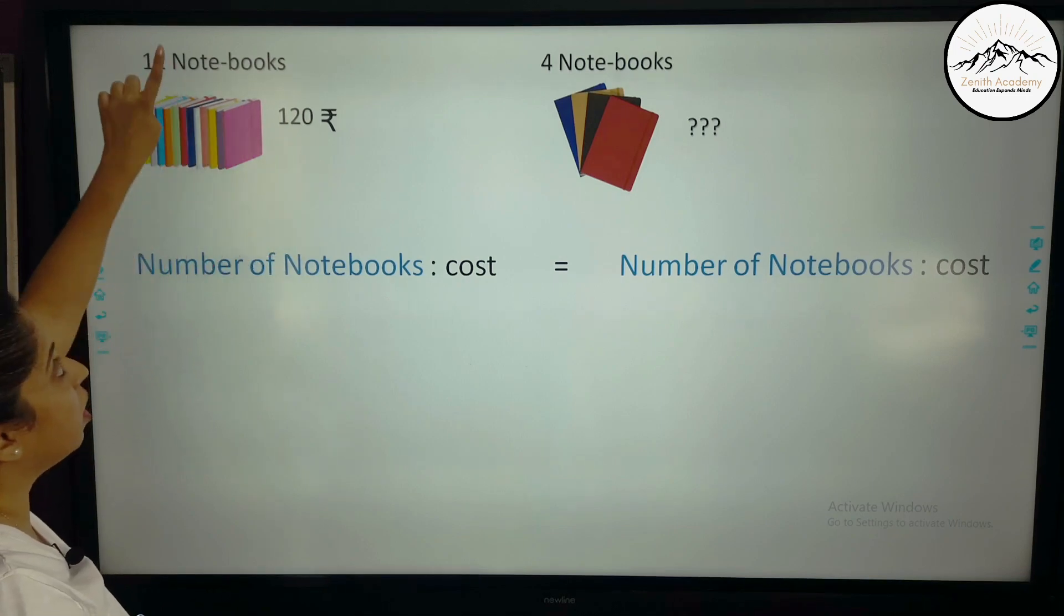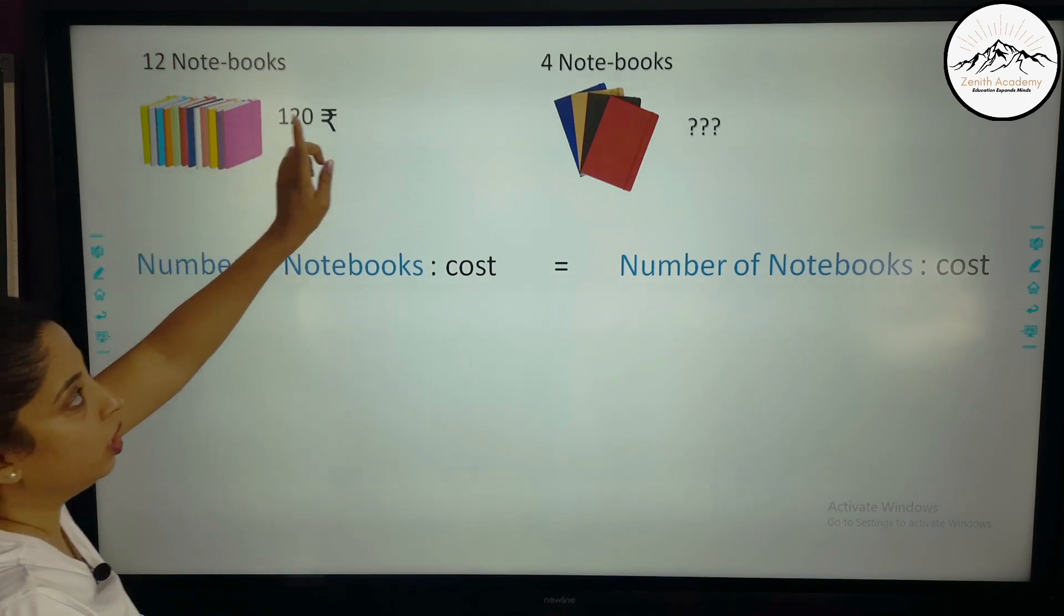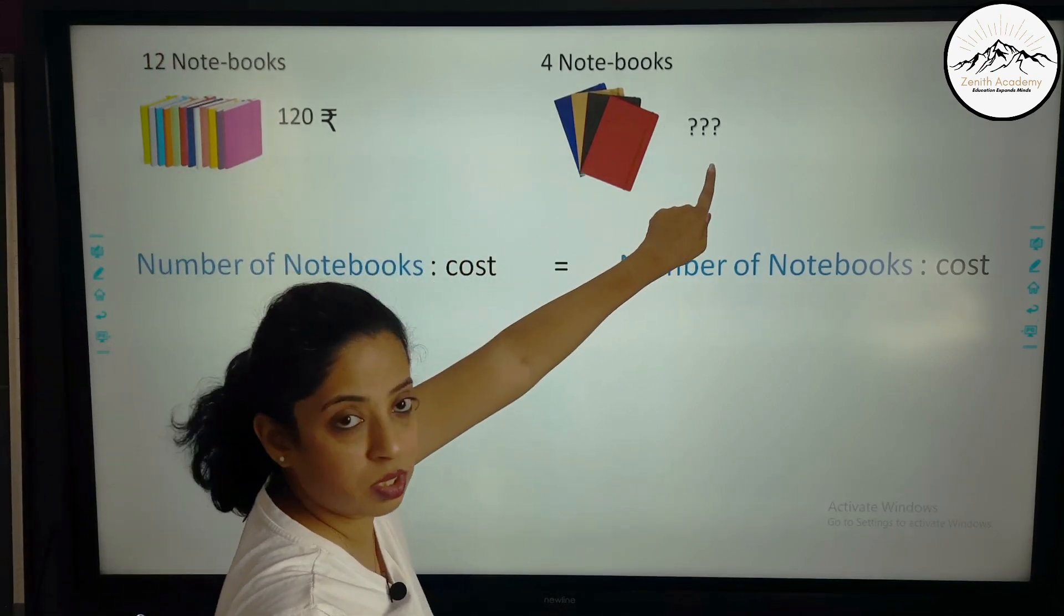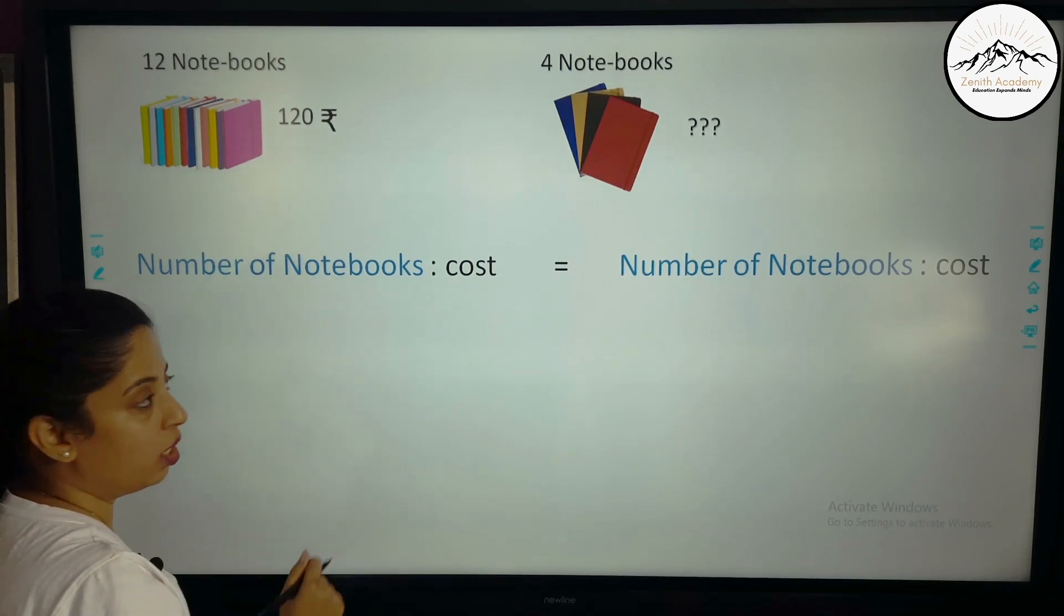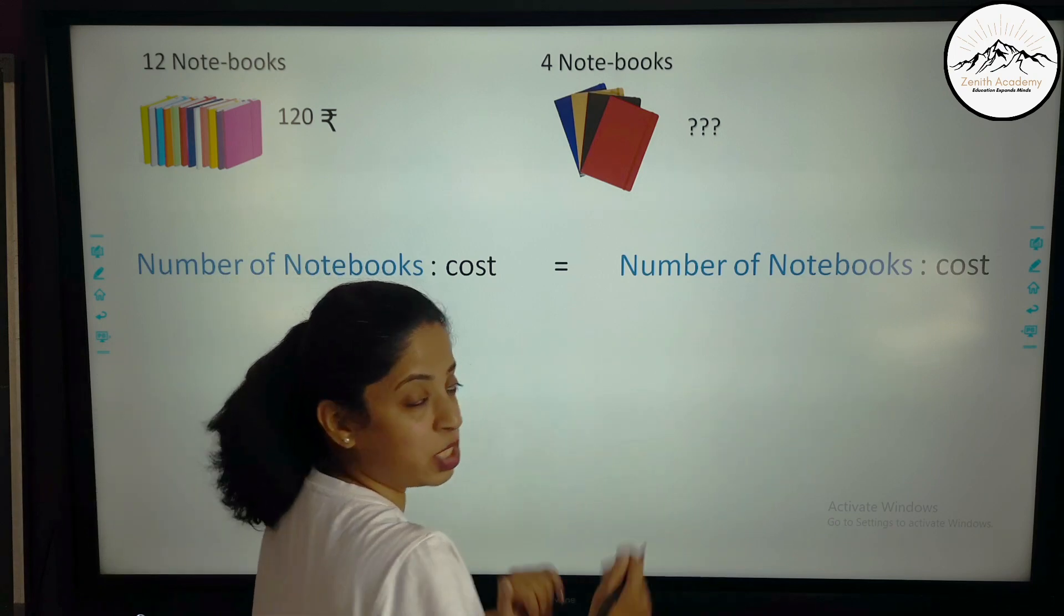So we have two things here. The number of notebooks and cost. The number of notebooks and cost. So I write here two ratios. Number of notebooks is to cost is equal to number of notebooks is to cost.